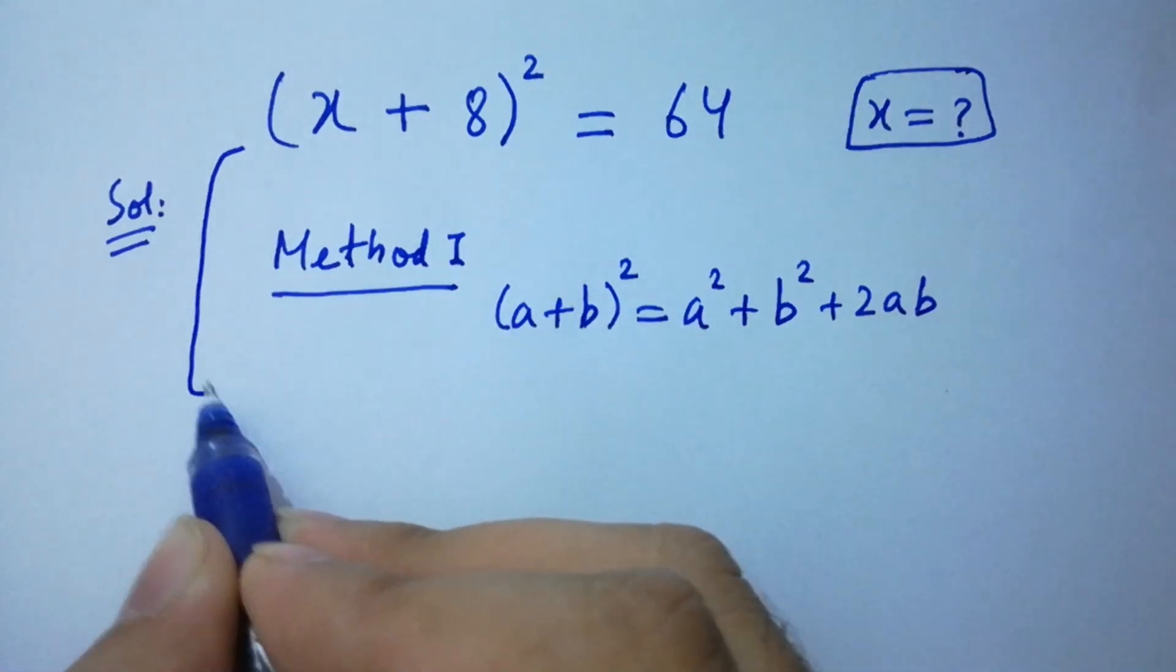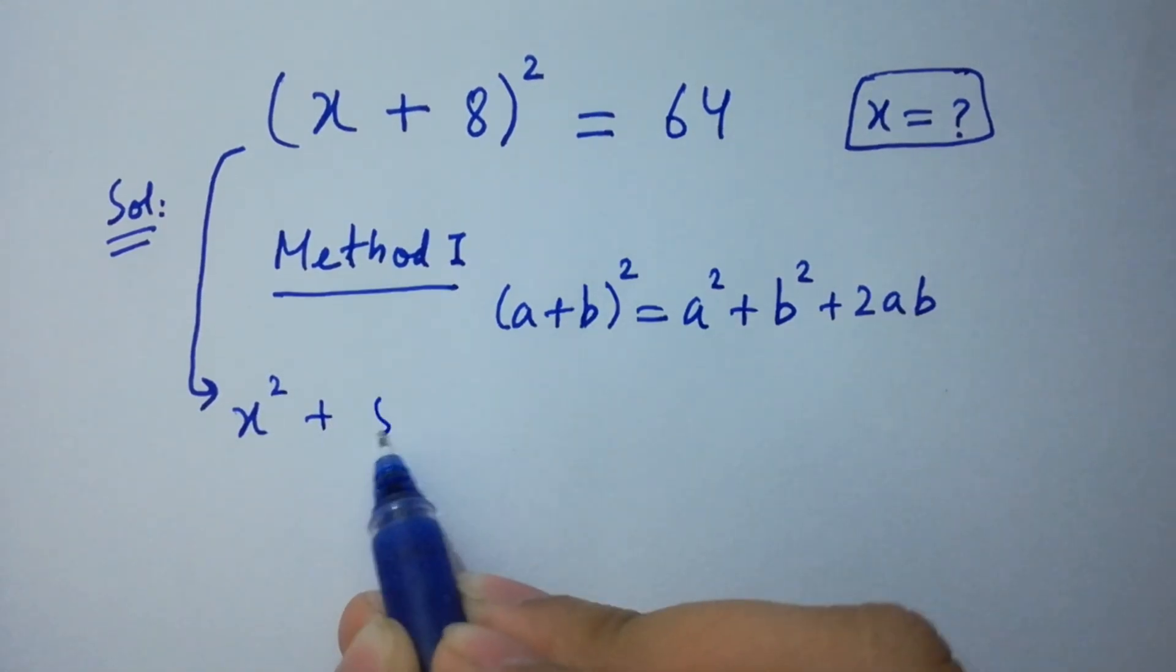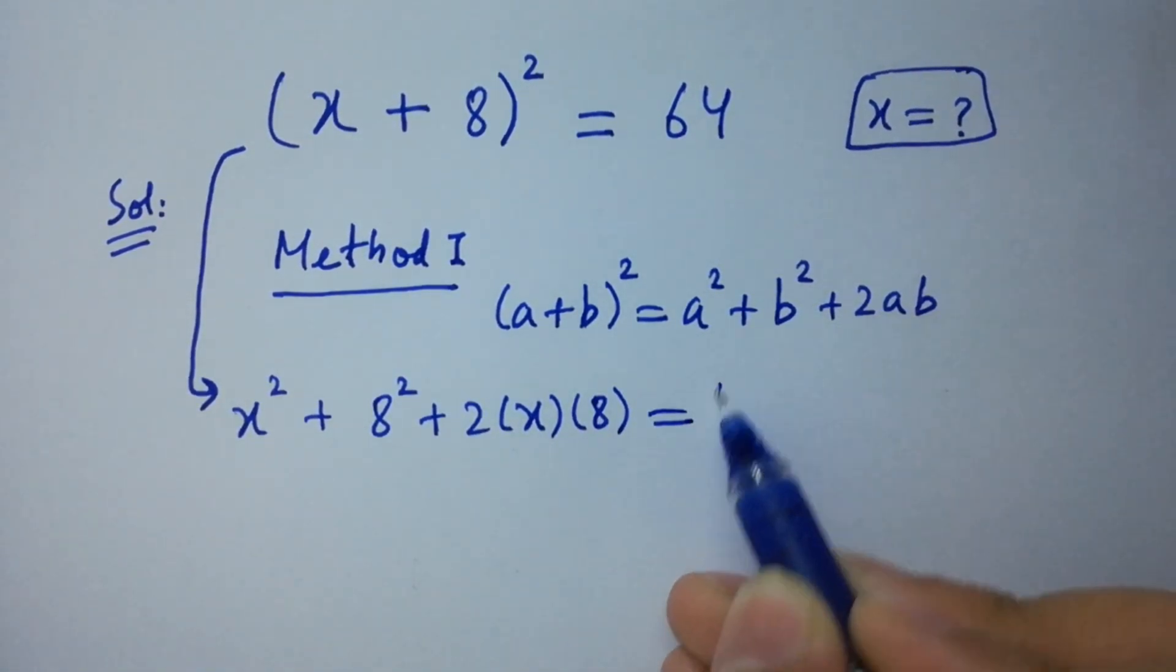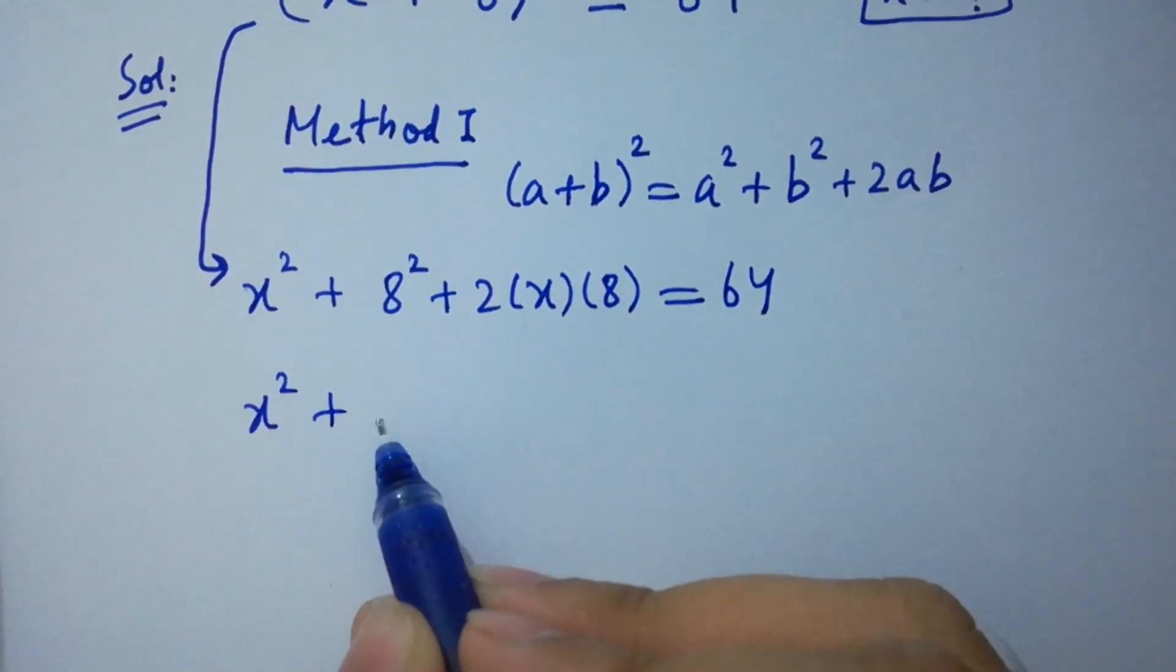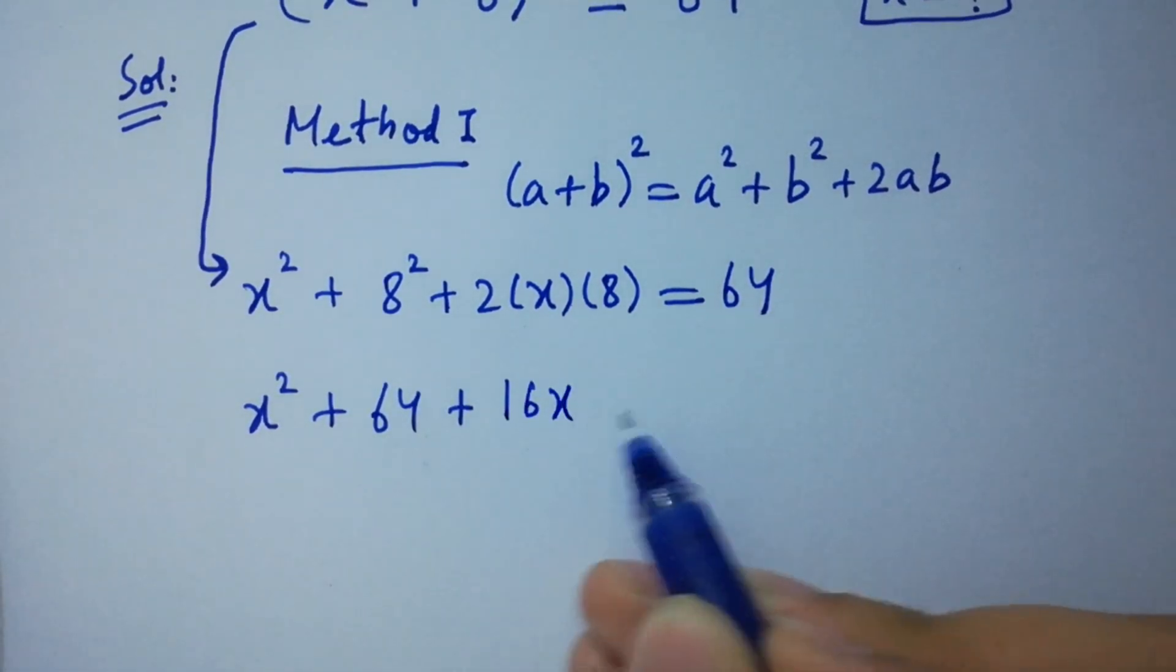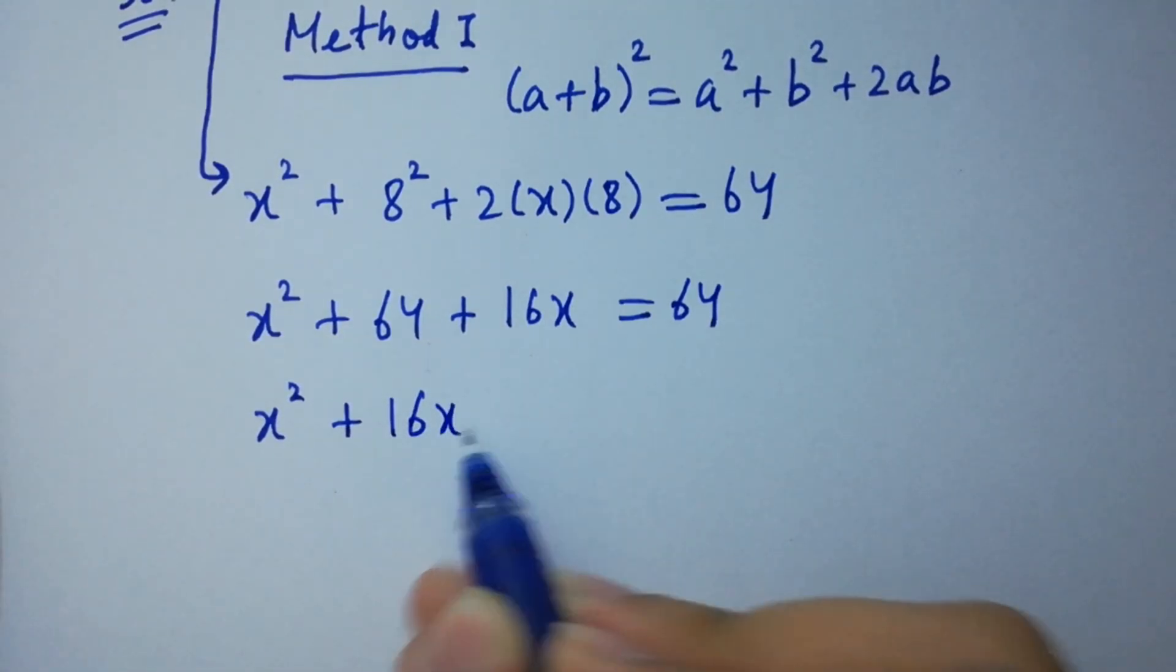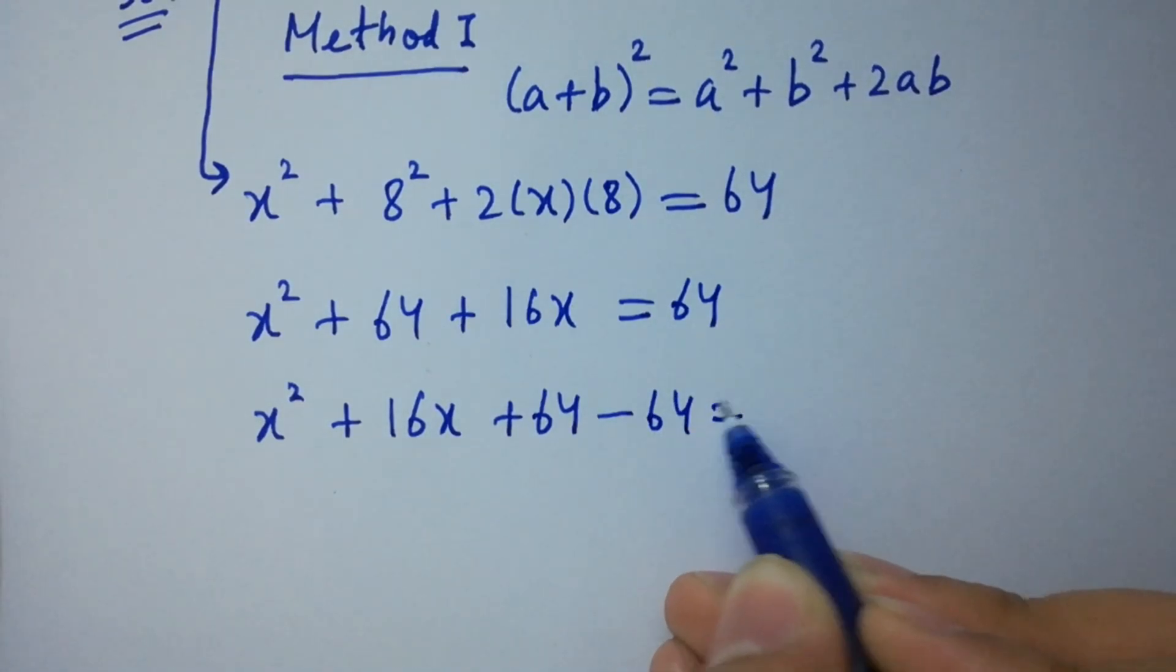Apply this formula. We have x² + 8² + 2(x)(8) = 64. x² + 64 + 16x = 64. We have x² + 16x + 64 - 64 = 0.